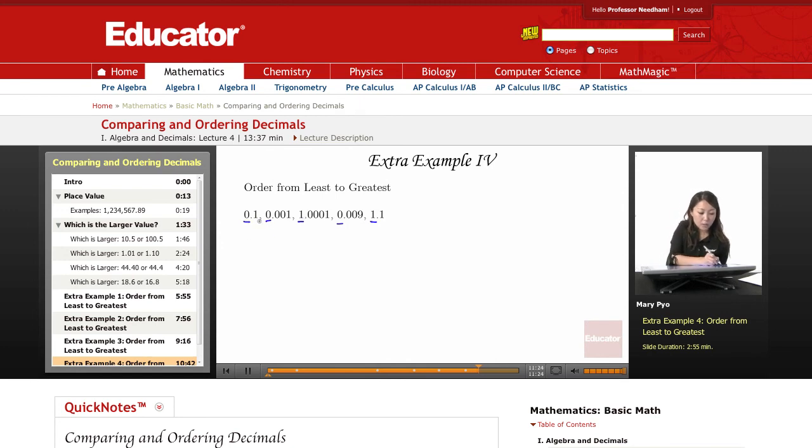So between this one, this one, and that one, between those three numbers, I'm going to have my least, my smallest value. So from those, you're going to look at the next place value, which is the tenths place value.